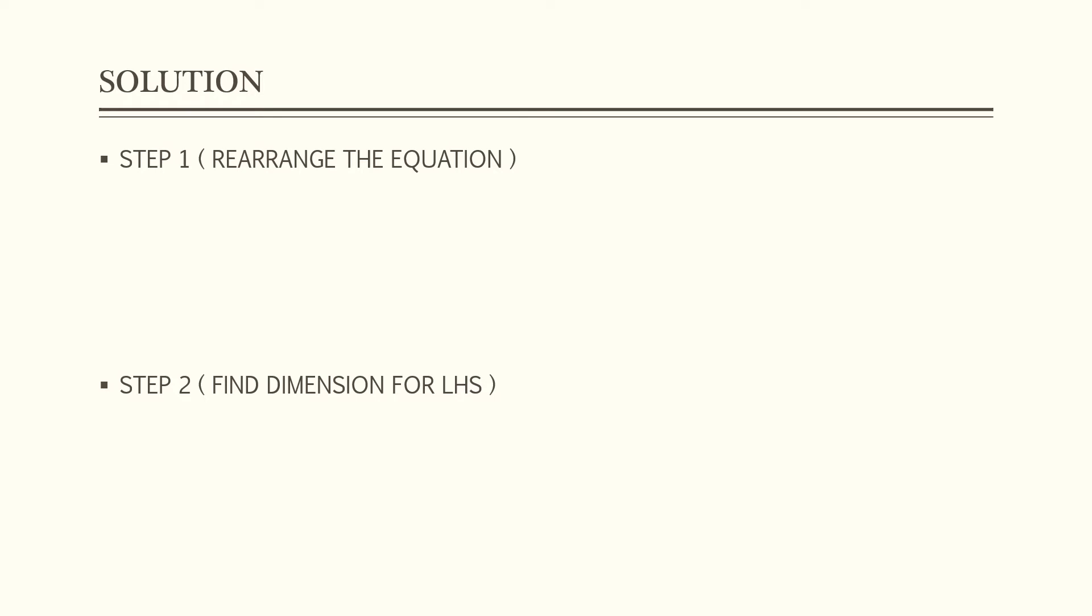First of all you have to rearrange the equation. The equation given is V equals the square root of GM over R. So you rearrange the equation. So the equation becomes V squared equal to GM over R.